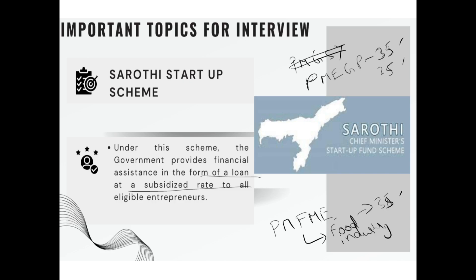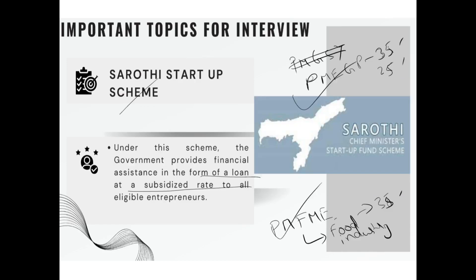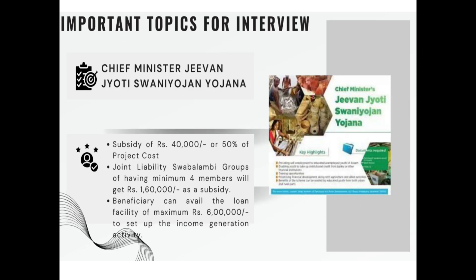These are the key schemes to mention in interview answers — two are central government schemes and one is from the state government. Whenever there is a question about industrial development or how unemployed youth can earn livelihoods, you can refer to the Haruti scheme, PMEGP, PMFME, and the Notice Skill Center scheme, which helps youth gain skill development for eligibility in various industry sectors.